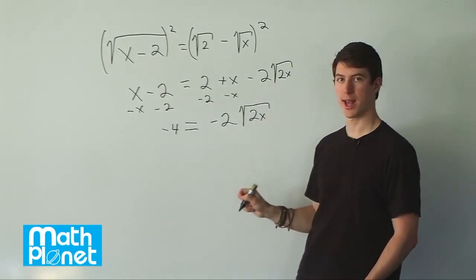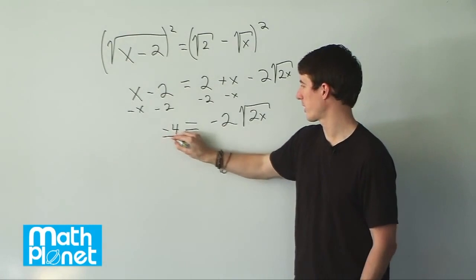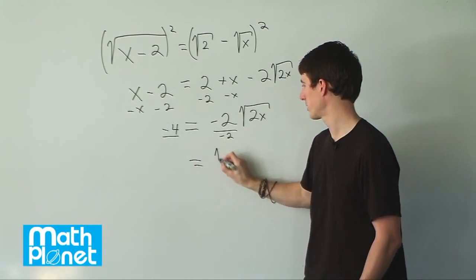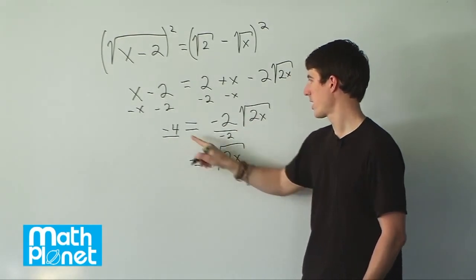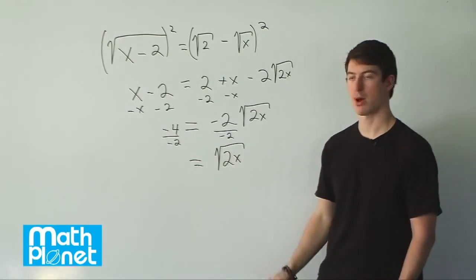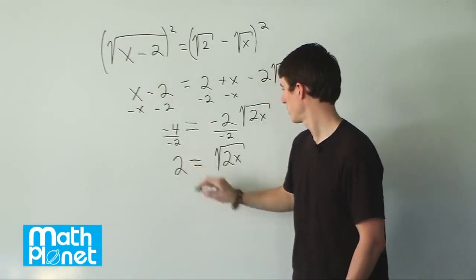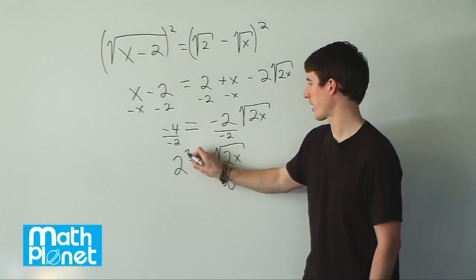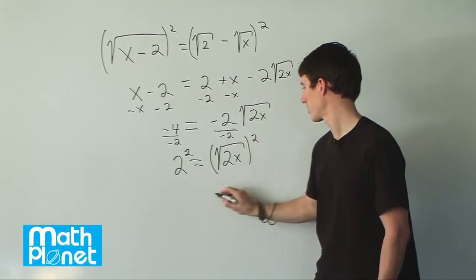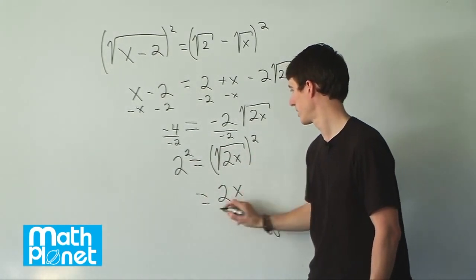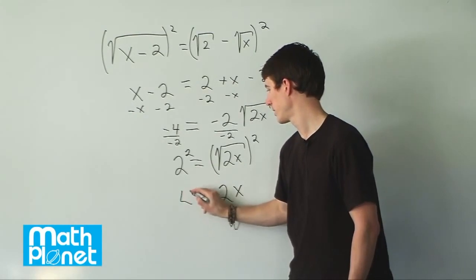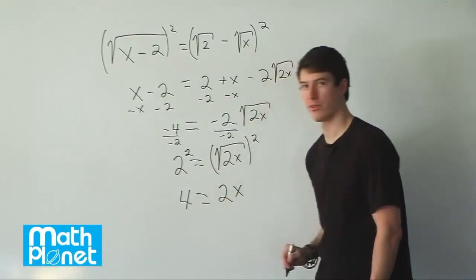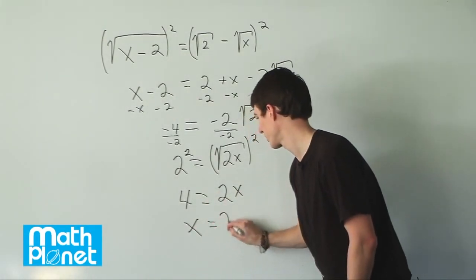Now we just have one x by itself — there's no transcendental equation where we have both an x and an x inside the square root. To get to this x, let's divide both sides by negative 2. That just gives us root 2x on the left, and negative 4 divided by negative 2, which is positive 2. Now again we have a square root, so we can square both sides to get rid of it. That gives us 2x equals 2 squared, which is 4. Finally, divide both sides by 2: x equals 2.